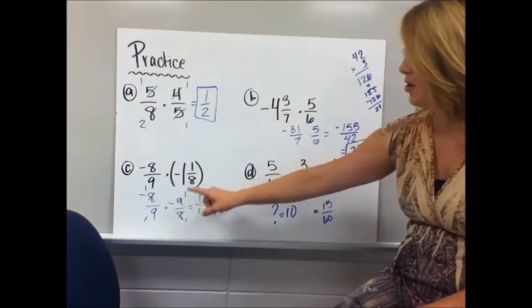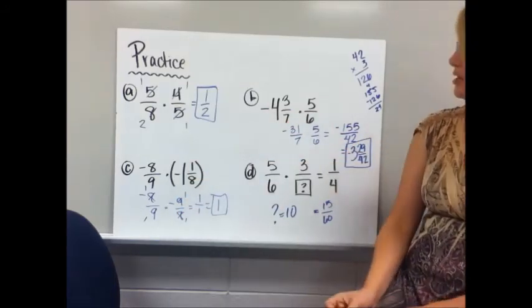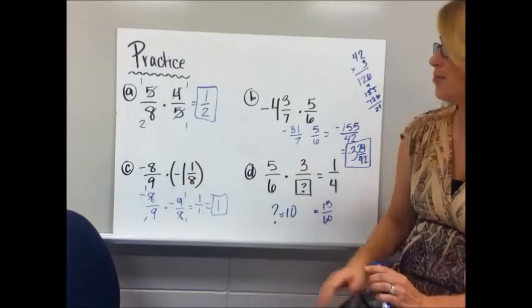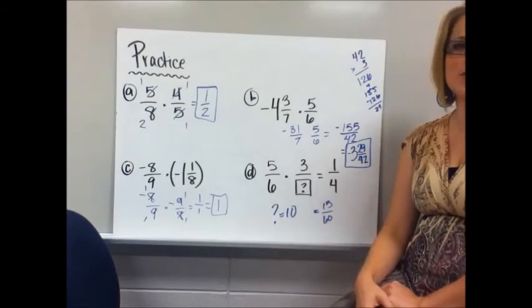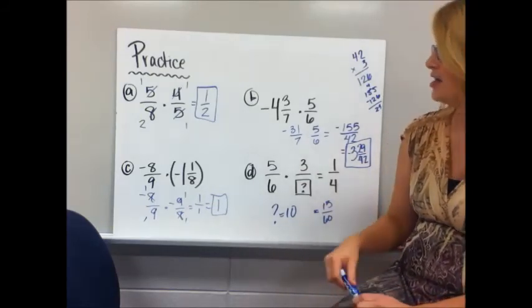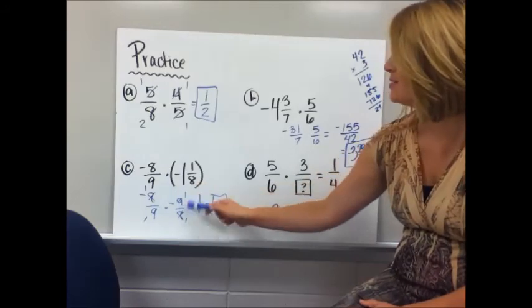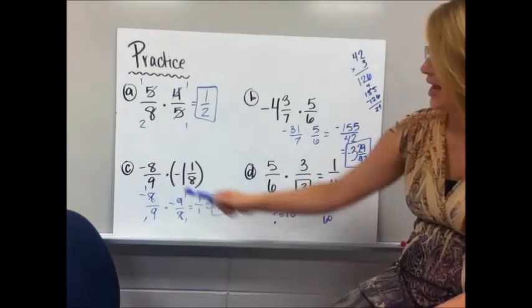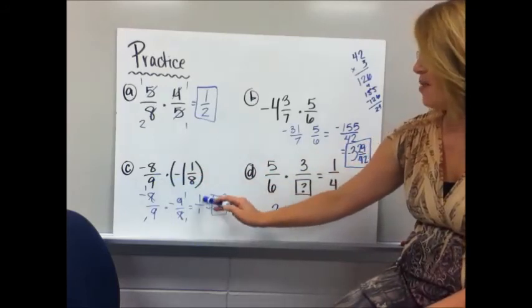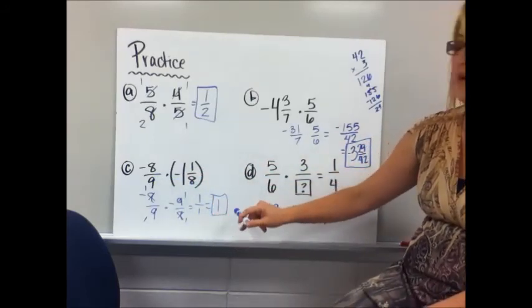In practice C, again, you've got to turn that mixed number into the improper fraction, and I got the reciprocals of each other, which is a word that you're going to see next lesson in dividing fractions. 8 over 9 times 9 over 8, all four corners are going to cancel out to ones. It's a negative times a negative, so I have positive 1 over 1, which simplifies to be 1.